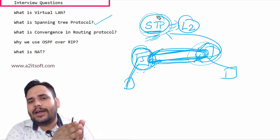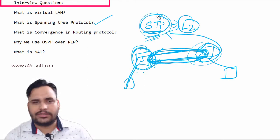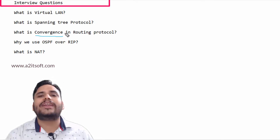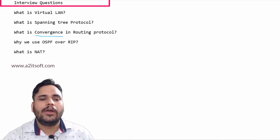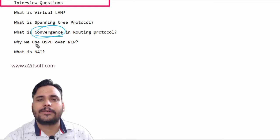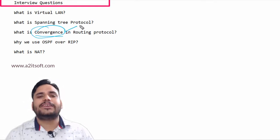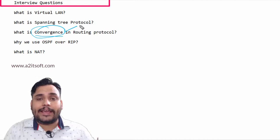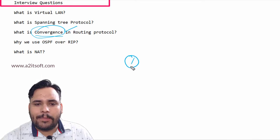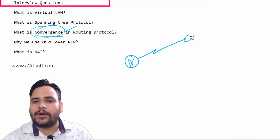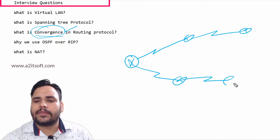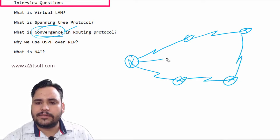Another question is: What is convergence in routing protocol? In every routing protocol we have a concept of convergence. Convergence is the time taken by the router. For example, from one router to another router to another destination we have multiple paths.